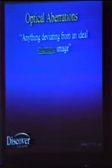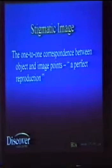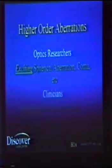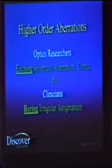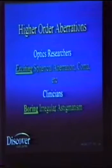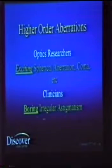Optical aberrations — what are they? Well, it's anything that's not a stigmatic image. To obtain a stigmatic image, we need to have a perfect reproduction of the object to the image. And as clinicians, we are typically lumpers. We look at all this really exciting stuff, spherical aberration in common, and we just talk about irregular astigmatism.